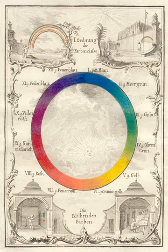Although color theory principles first appeared in the writings of Leone Battista Alberti and the notebooks of Leonardo da Vinci, a tradition of color theory began in the 18th century, initially within a partisan controversy over Isaac Newton's theory of color and the nature of primary colors. From there it developed as an independent artistic tradition with only superficial reference to colorimetry and vision science.